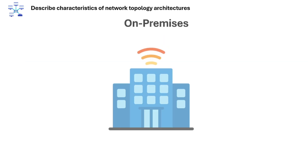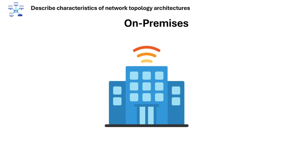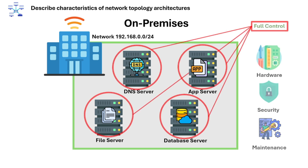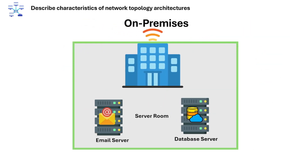Next is on-premises and cloud. On-premises is infrastructure and software hosted locally on a company's physical premises. This provides full control over hardware, security, and maintenance. A use case example is a company that hosts its email and database servers in its own server room.